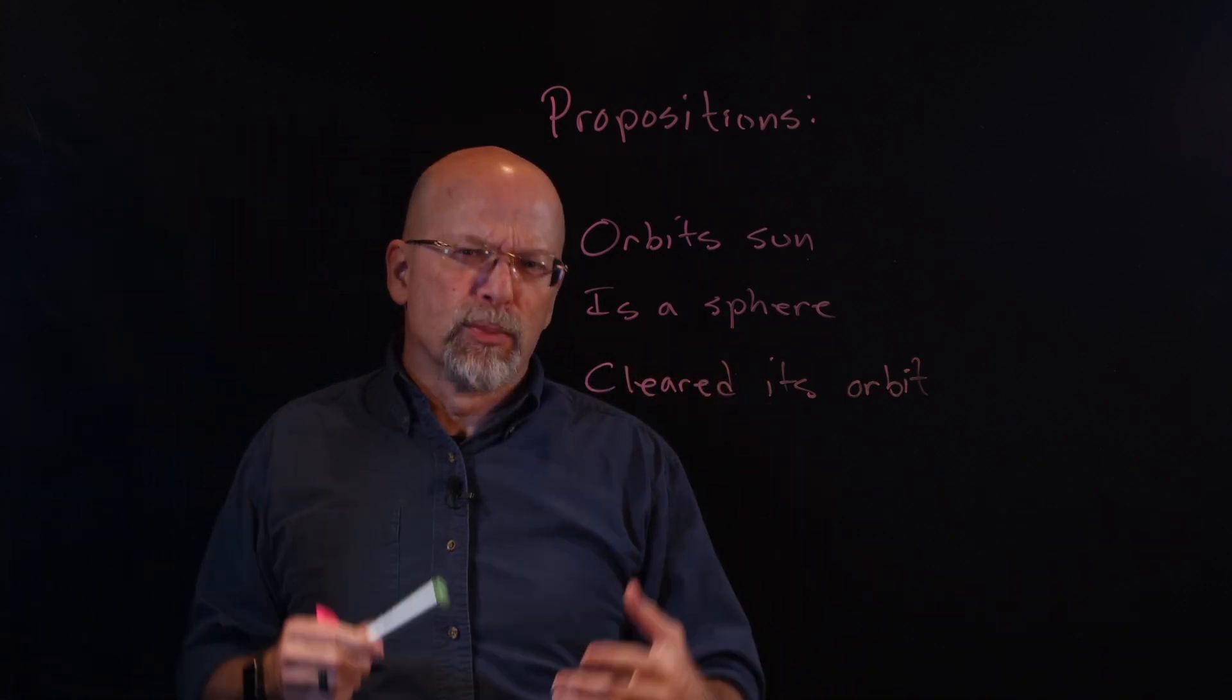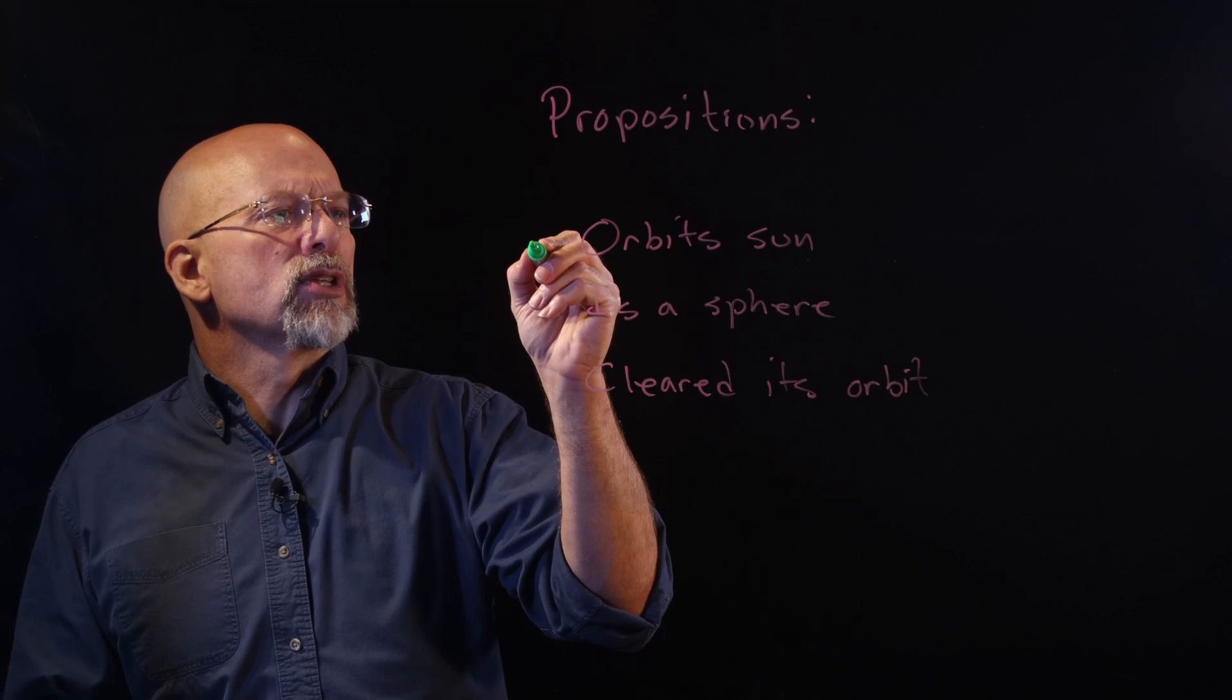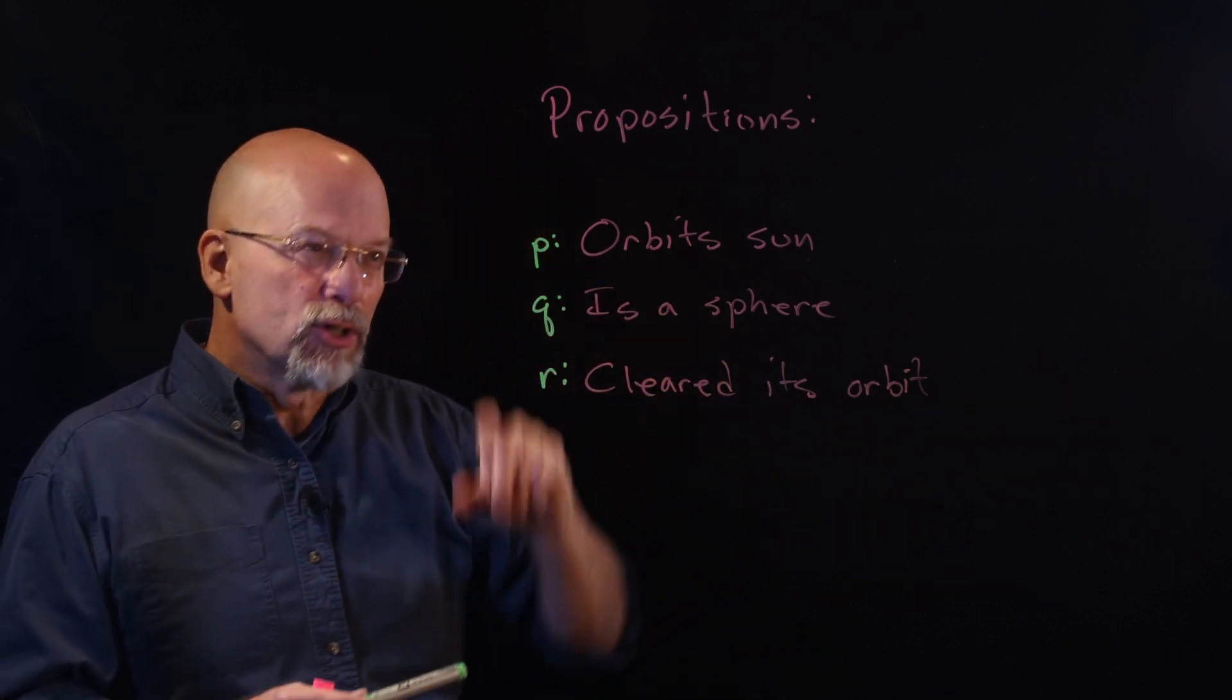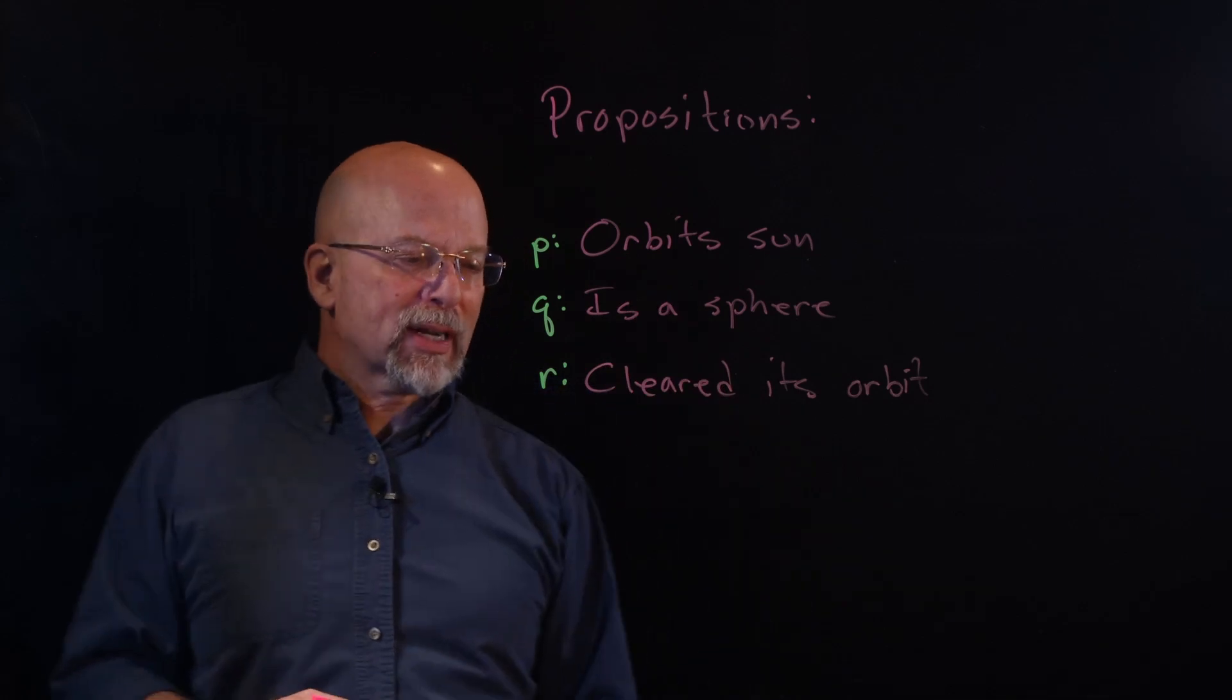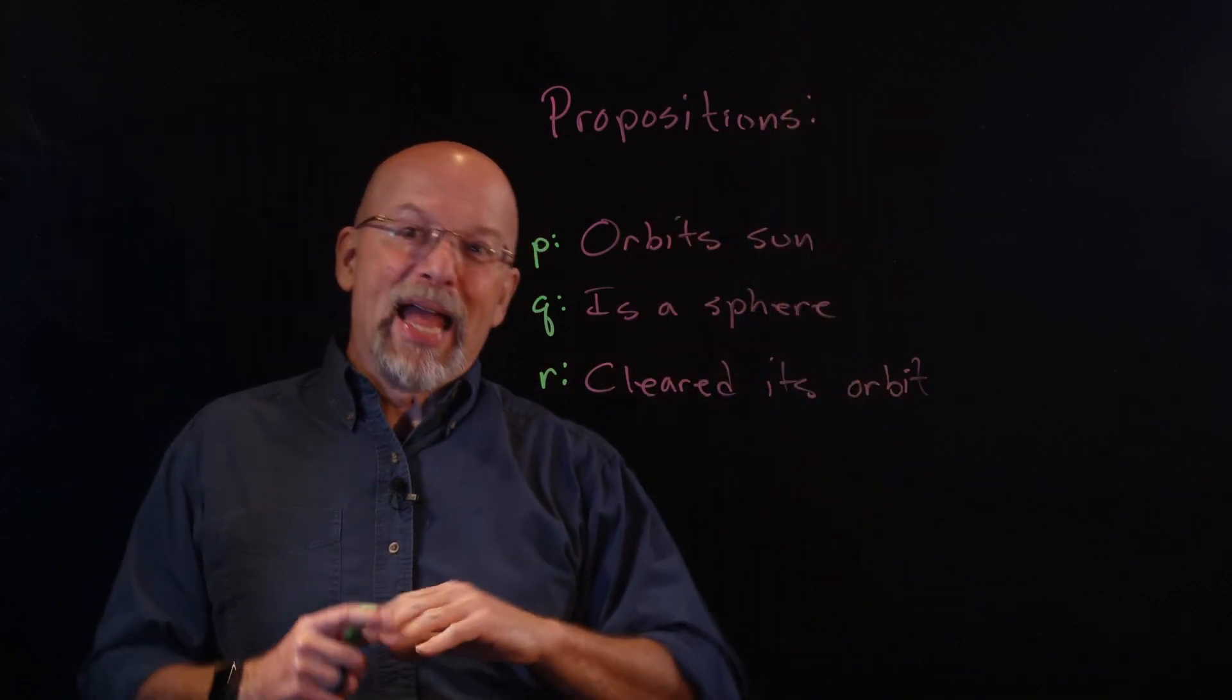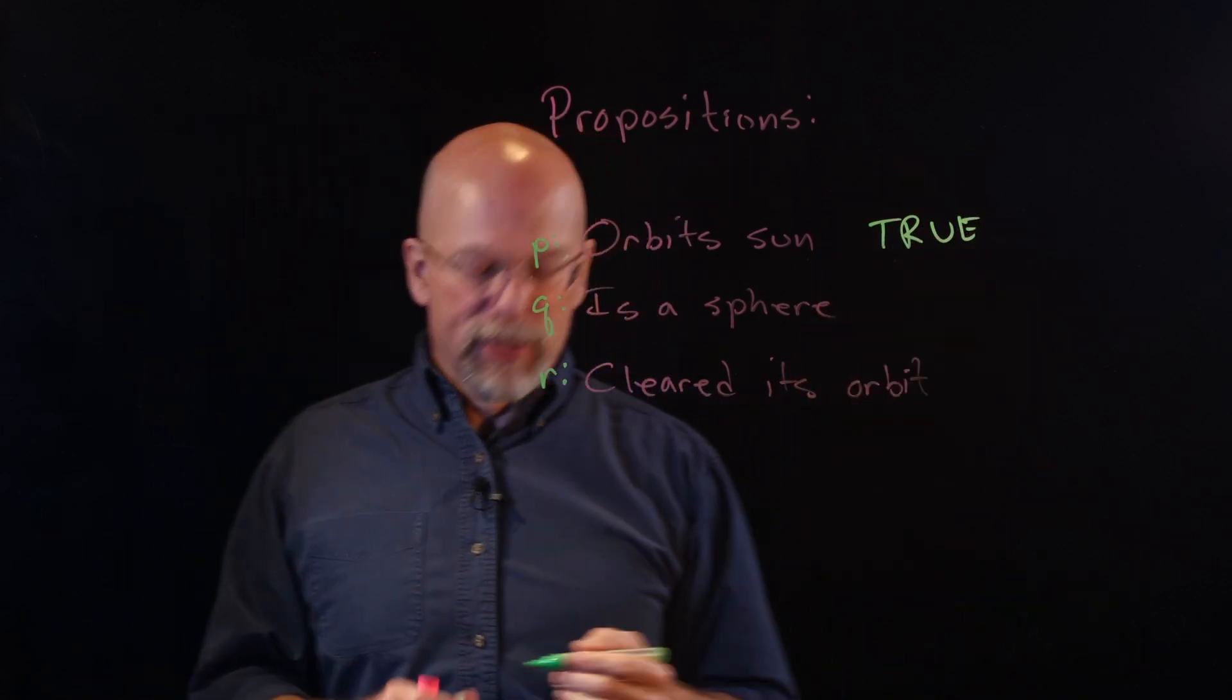Now in math, like algebra, we're used to representing variables with things like X, Y, and Z. Well, when it comes to these propositions, we are going to use the letters P, Q, R, S if we need it. Whenever it comes to Pluto, it orbits the Sun. Yep, it does it in kind of a goofy way. It does it at a 17-degree angle off of everybody else. But it does in fact orbit the Sun. So this is a true proposition.